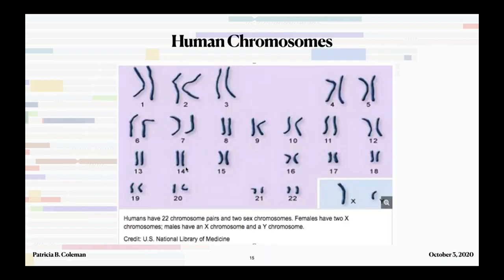Humans have 22 pairs of autosomal chromosomes — you get one from your mother and one from your father. There's also the sex chromosome: males get a Y from their father and an X from their mother, and females get an X from each parent. Some testing companies that do autosomal DNA will also give you X chromosome results, but not all of them.